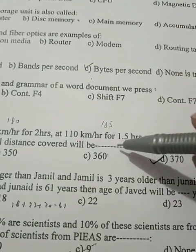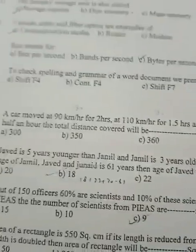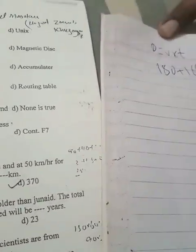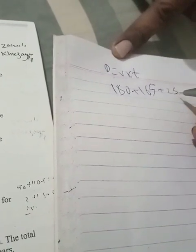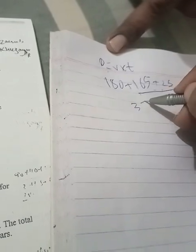110, velocity 110, 1.5 time, 1.5 se multiply 165. Last wali velocity 50, time half hour, 25. Jab inko add karenge 180, 165, 25, answer 370.